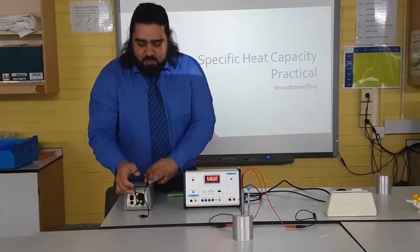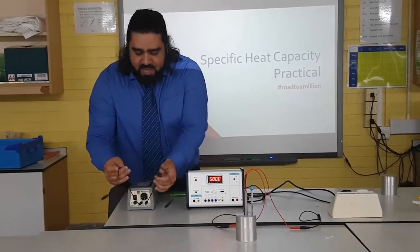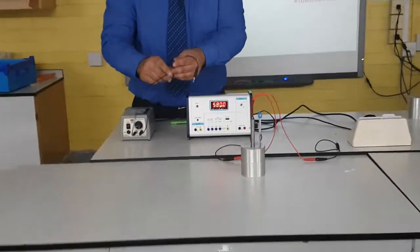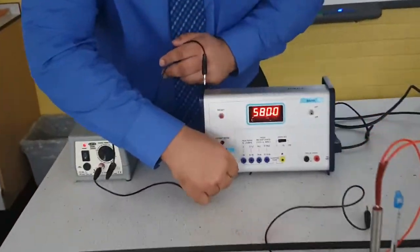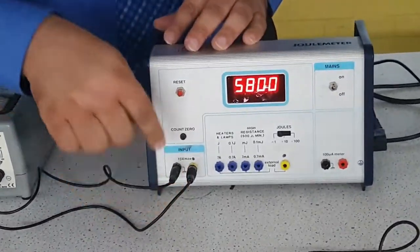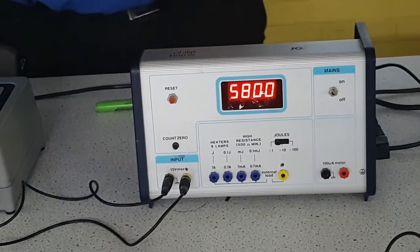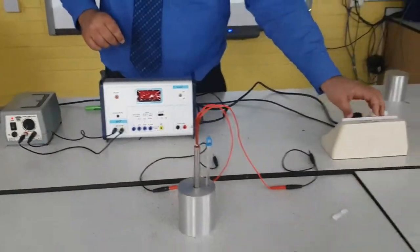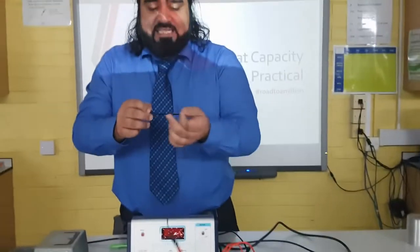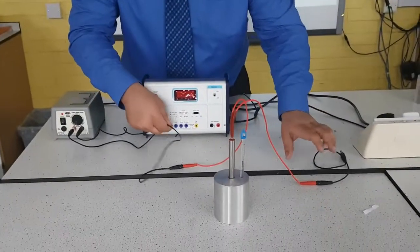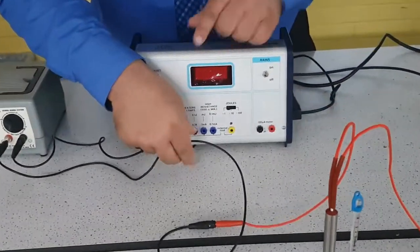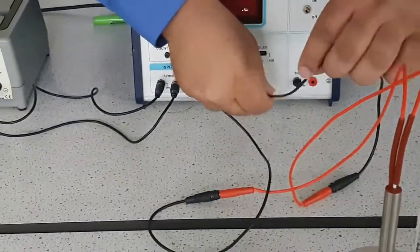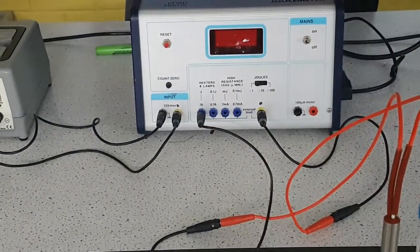So how are we setting this up? We have a power pack which is going to go into the dual meter. I'm going to put that straight into this area here where it says input. Next, we're going to place our heater into the section where it says heater, and because it's the external load we're going to place the other one into that hole there.